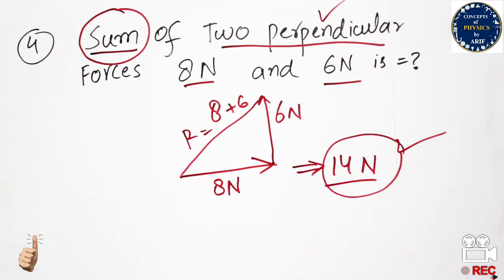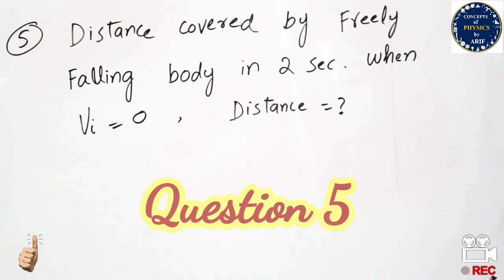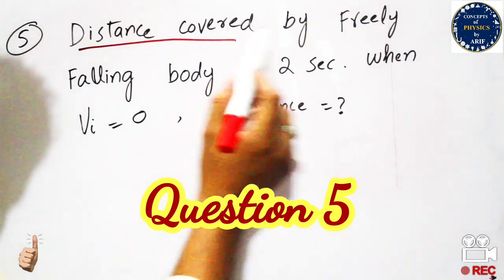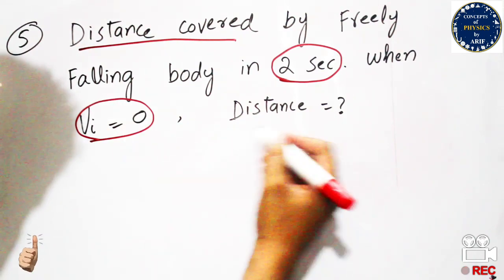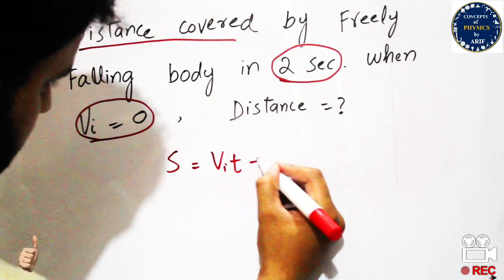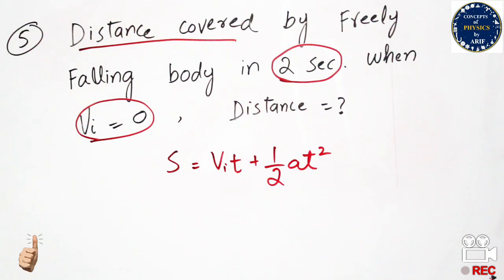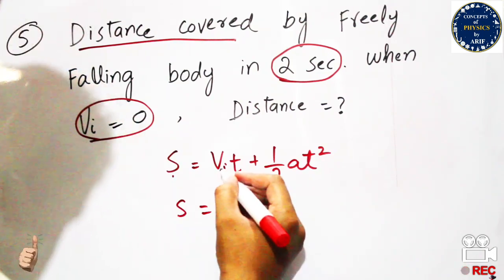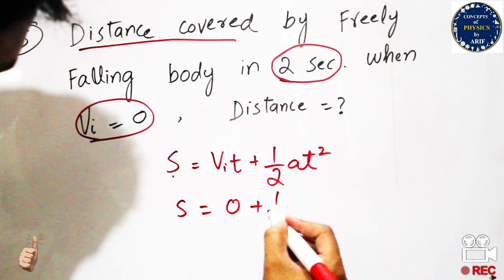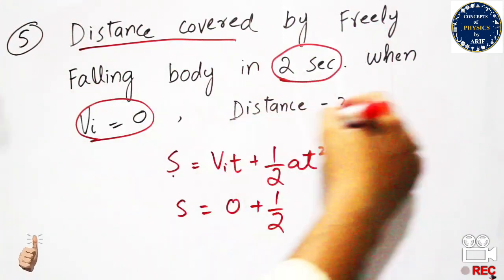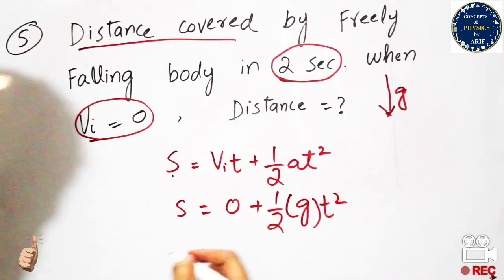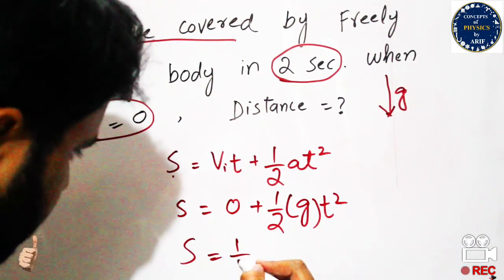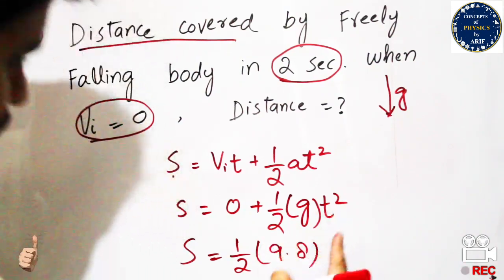The next question asks for the distance covered by a freely falling body in two seconds with initial velocity zero. Using the second equation of motion, s = v_i·t + ½·a·t². Since initial velocity is zero, that term vanishes. The body falls freely under gravity, so acceleration equals g.